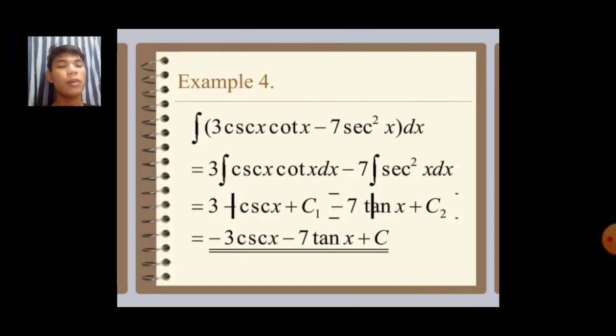So example. Integral of quantity 3 csc x cot x minus 7 sec squared x dx. Then 3 integral of csc x cot x minus 7 integral of sec squared x dx.